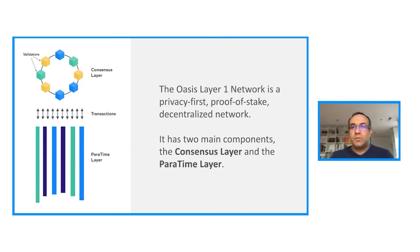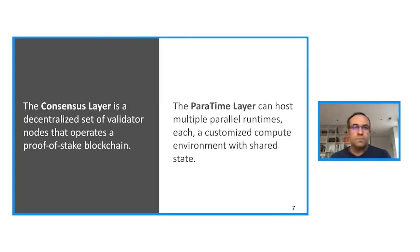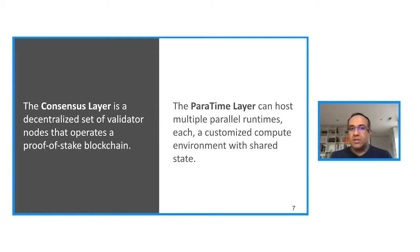The OASIS network is a layer one network — a privacy first, proof of stake, decentralized network. It has two main components: the consensus layer and the paratime layer. The consensus layer is a decentralized set of validator nodes that operates a proof of stake blockchain. The paratime layer, which stands for the parallel runtime layer, can host multiple parallel runtimes, each a customized compute environment with shared state. What is unique about the OASIS architecture is that we have separated out consensus from execution, which gives us a lot of power, flexibility, and advantages.